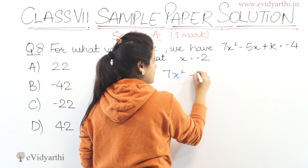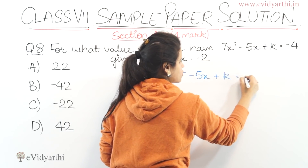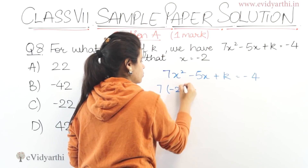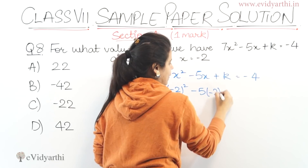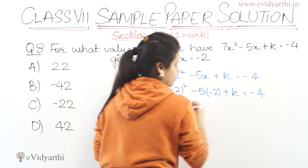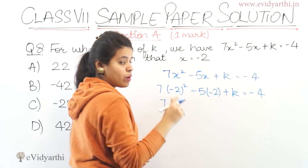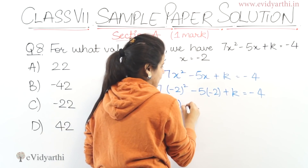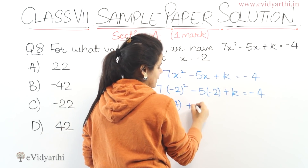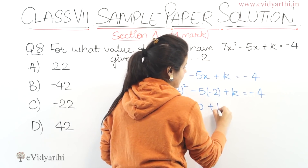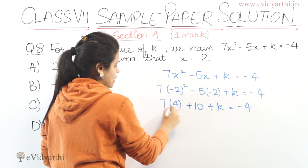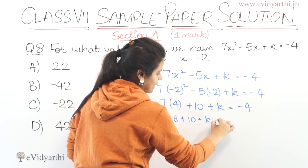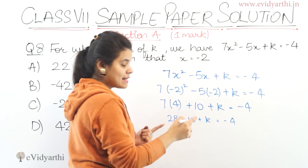So we have 7x squared minus 5x plus k equals to minus 4. Let's put the values: x ki jagah minus 2. So it becomes 7 times minus 2 squared, minus 5 times minus 2, plus k equals minus 4. Minus 2 into minus 2 is 4, and minus minus becomes plus, so 5 into 2 is 10. So we get 10 plus k equals minus 4. Now 7 into 4 is 28 plus 10, plus k equals to minus 4.